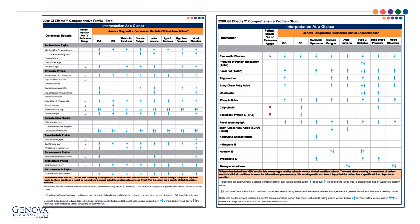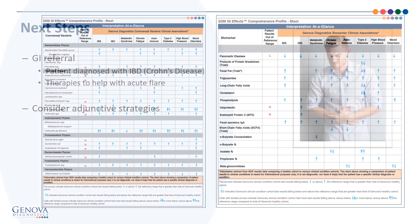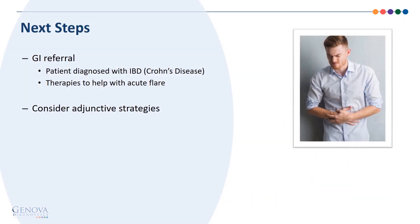These are the final two pages of the patient's report. The first column showing the patient's results is similar to the IBD cohort pattern. The patient did end up being diagnosed with Crohn's disease, and in addition to conventional treatment strategies to help with the acute flare, other adjunctive support may be considered as well.